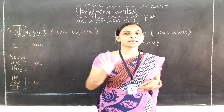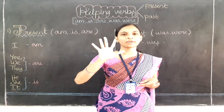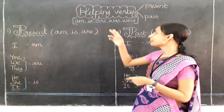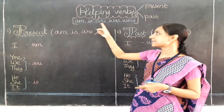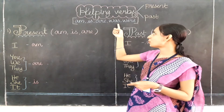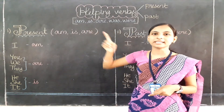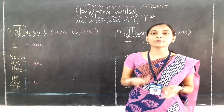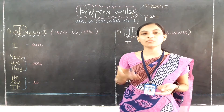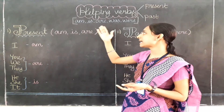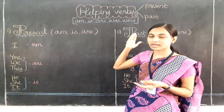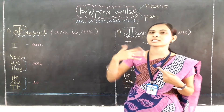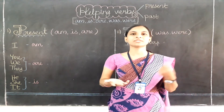What are helping verbs? Five words are the helping verbs: am, is, are, was, were. Now I am going to tell you where to use am, is, are, was, were in a sentence, and which represent the present and which represent the past.